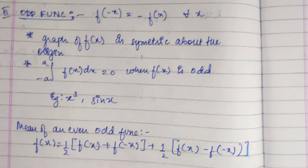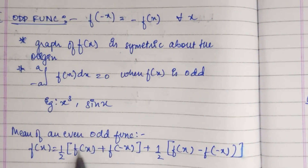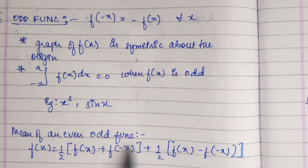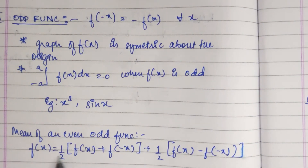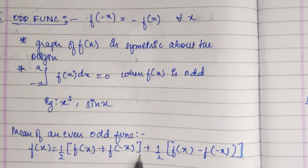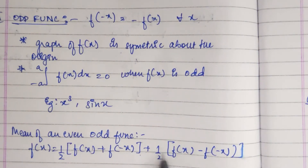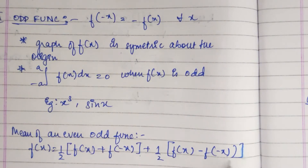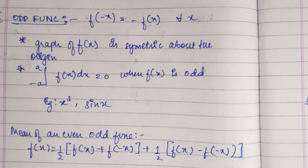The decomposition of a function into even and odd parts is: f of x equals half of f of x plus f of minus x, plus half of f of x minus f of minus x.